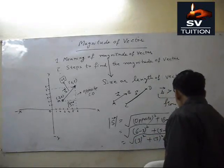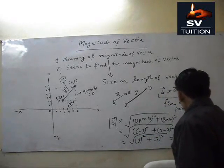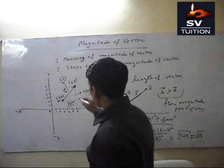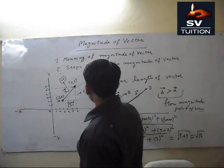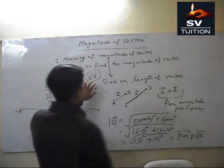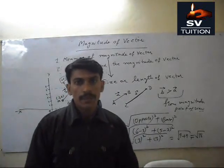Nine plus nine. Eighteen's square root. And its value is square root 18. This is the magnitude. Okay, thank you very much.